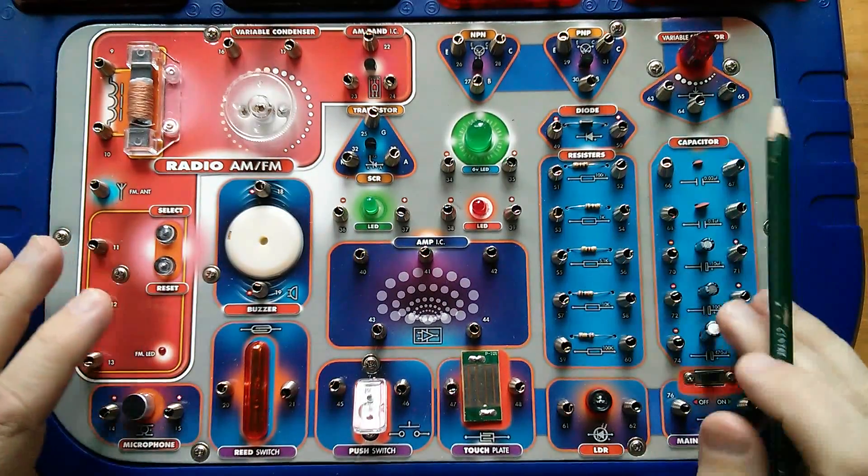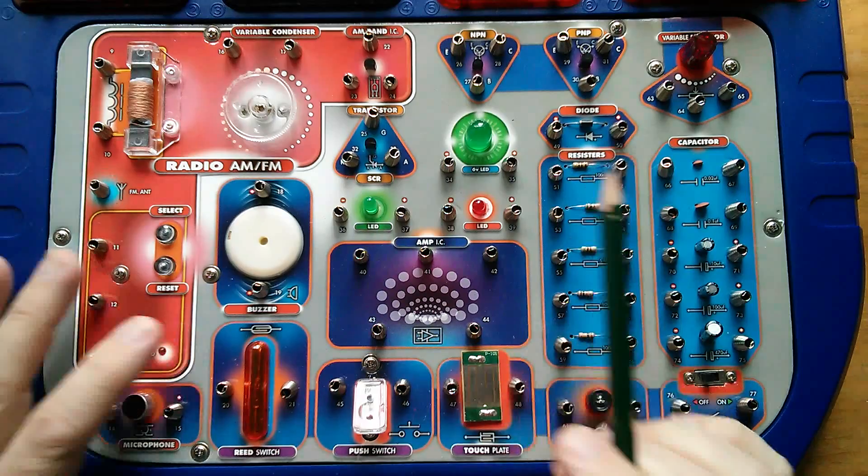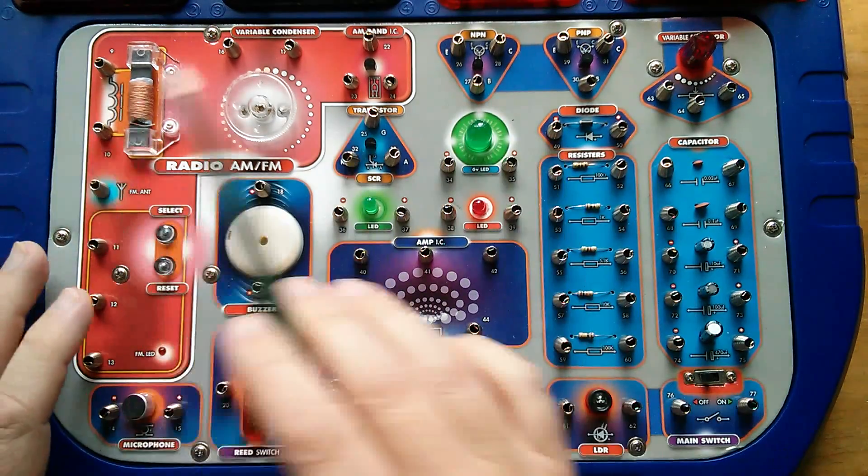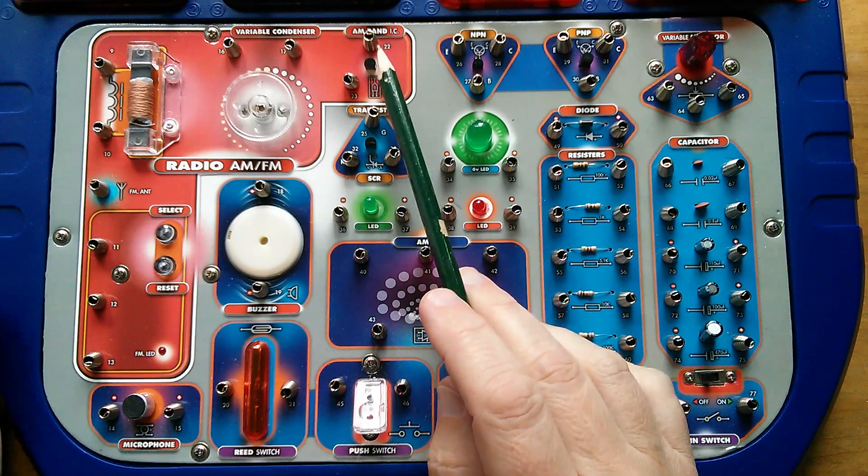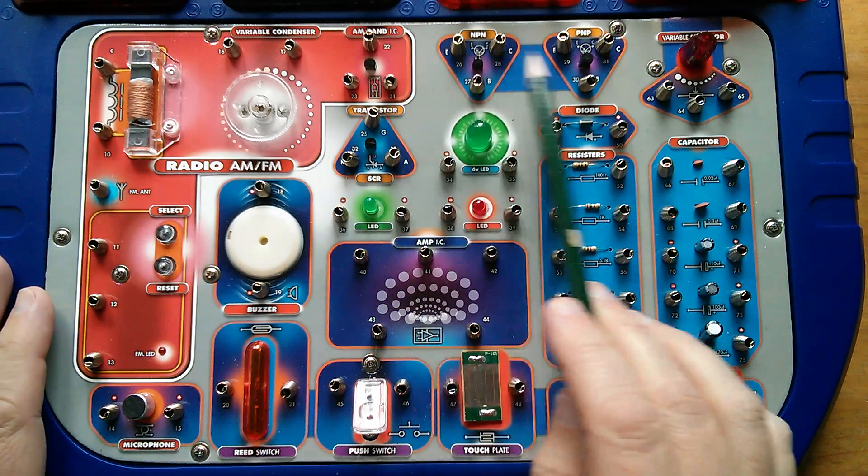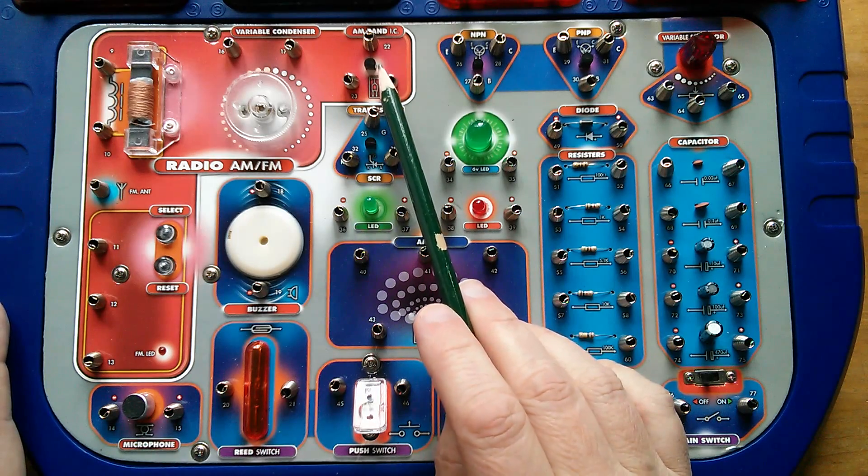And there's a sort of general criticism here. Despite this being aimed at both boys and girls, I'm not entirely sure they're going to learn much, certainly from the radio side of things, because we've got an integrated circuit here. Well, I mean, you could very easily build an AM radio using discrete components. I think you'd learn more than just shoving in an AM-band IC.